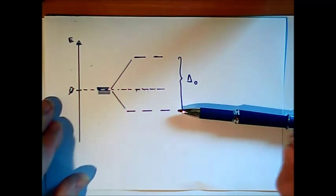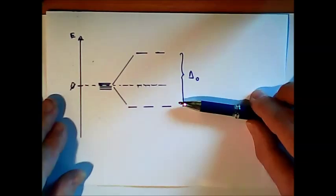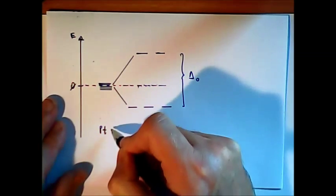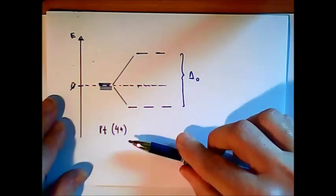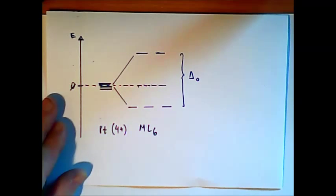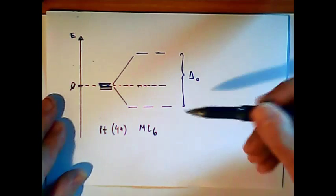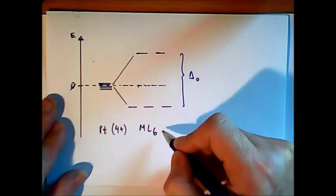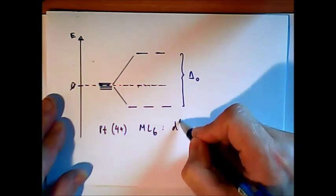Before we do this, I would like to show you one example of an octahedral complex. We have Platinum 4 Plus. Platinum 4 Plus complex forms an ML6 octahedral complex. So our two questions that we ask always is, first, how many valence electrons do we have? And second question, where are these valence electrons? Now Platinum itself should have 10 valence electrons.